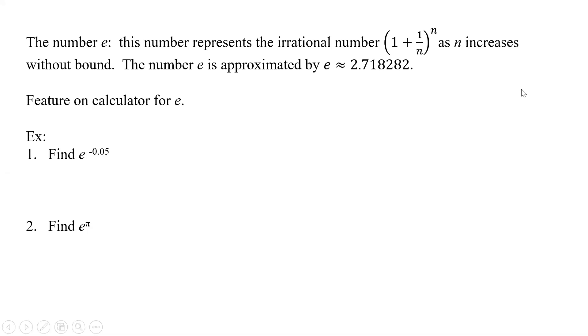We've been looking at b values, but b didn't represent anything specific. Now we're going to look at the number e, which is actually a specific number and represents the irrational number (1 + 1/n)^n as n increases without bounds. The number e is approximated by 2.718282, and really, if you think about it, that's e to the 1.